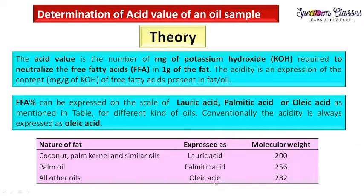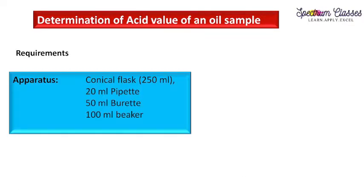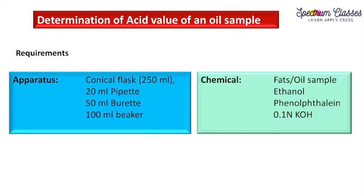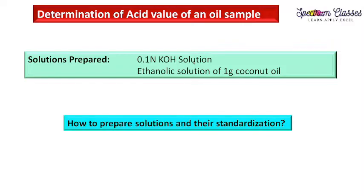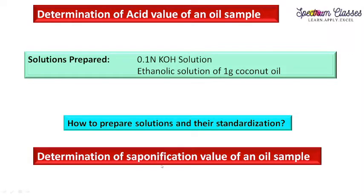The requirements are: conical flask, pipette, burette, and beaker. The chemicals required are fat or oil sample, ethanol, phenolphthalein indicator, and 0.1 normal KOH solution. The preparation of 0.1 normal KOH solution and its standardization is given in the experiment on determination of saponification value. If you need to prepare this solution, you can refer to that experiment. Now I will show you how to prepare the ethanolic solution of one gram of coconut oil.